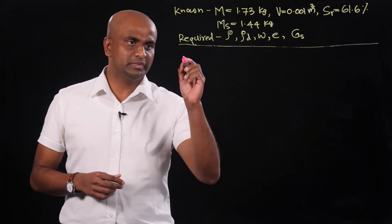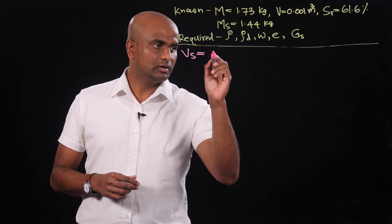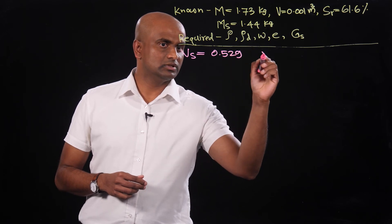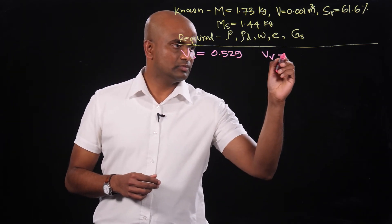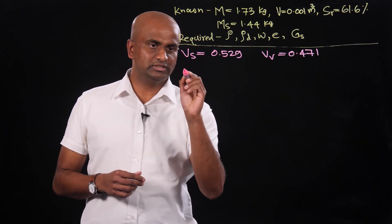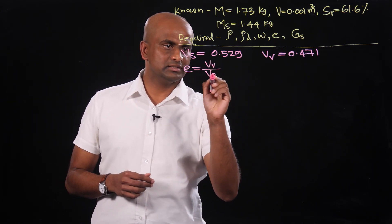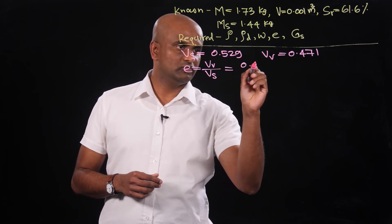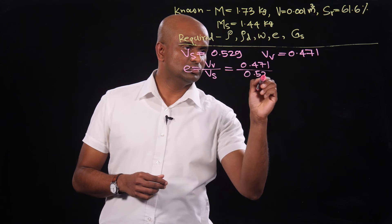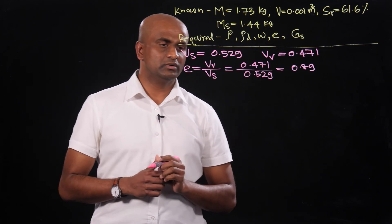We have determined the volume of solids as 0.529 cubic meters and the volume of voids as 0.471 cubic meters. The void ratio is volume of voids divided by volume of solids: 0.471 divided by 0.529, which gives a void ratio of 0.89.